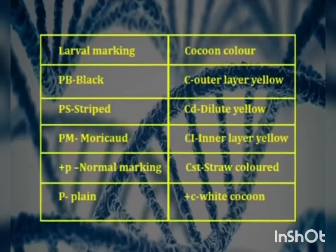In silkworm, multiple alleles are found for many traits, like the P locus involved in larval markings and the C locus for cocoon color. For larval marking, the P locus alleles are: pb for black color, ps for stripe, pm for morricone, plus-p for normal marking, and plain-p for plain marking.